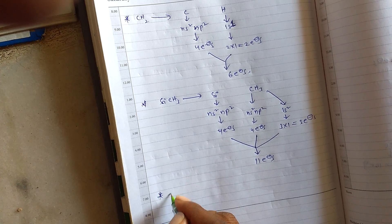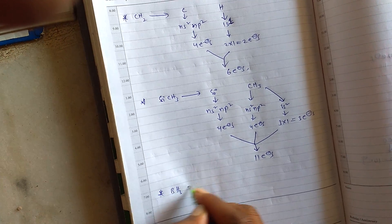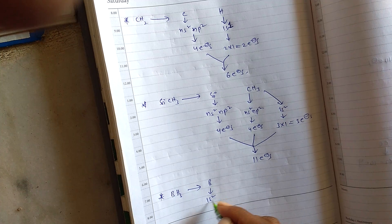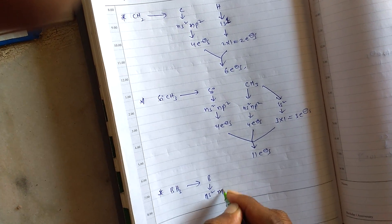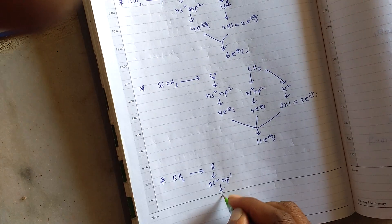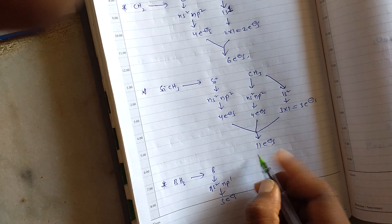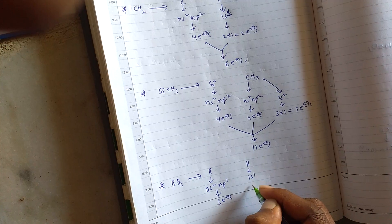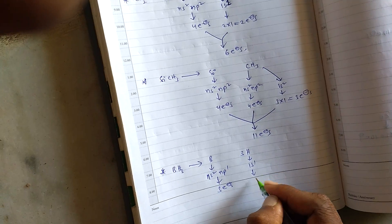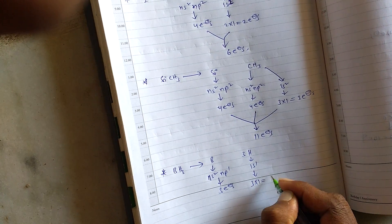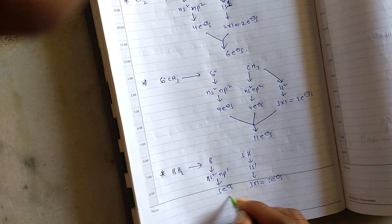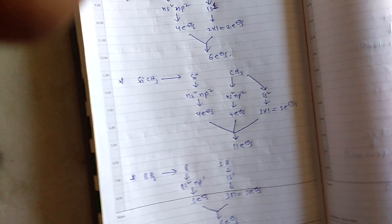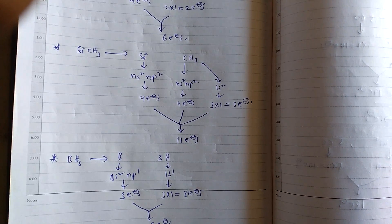Next, BH₃. Boron has electronic configuration NS²NP¹, that means it has 3 electrons. Hydrogen has 1s¹, and there are 3 hydrogens, so 3×1 = 3 electrons. Total: 6 electrons for BH₃.